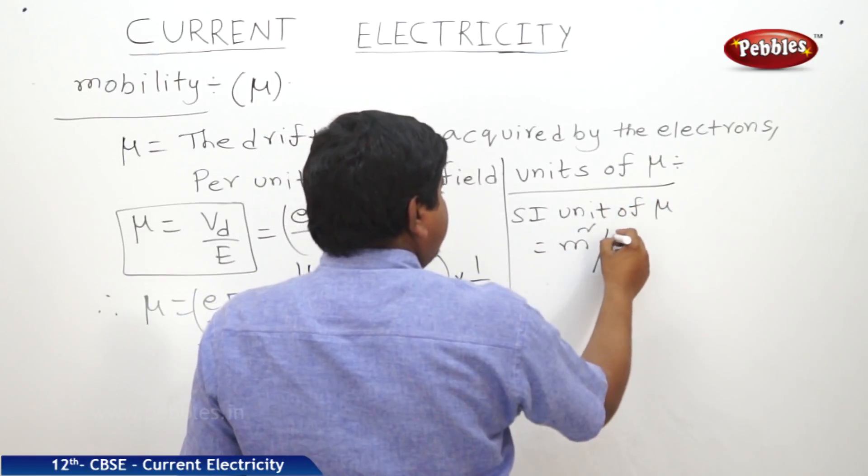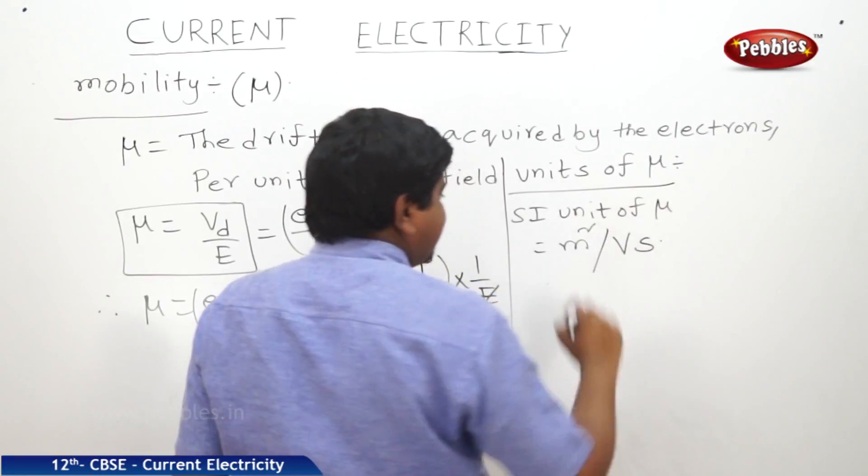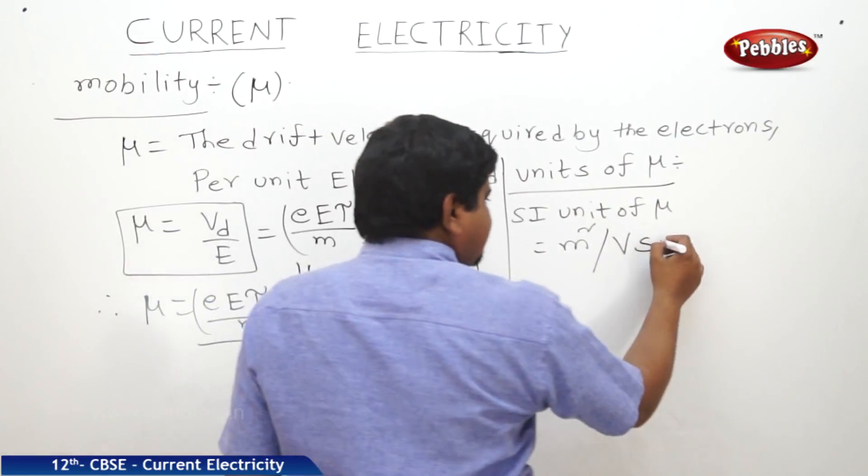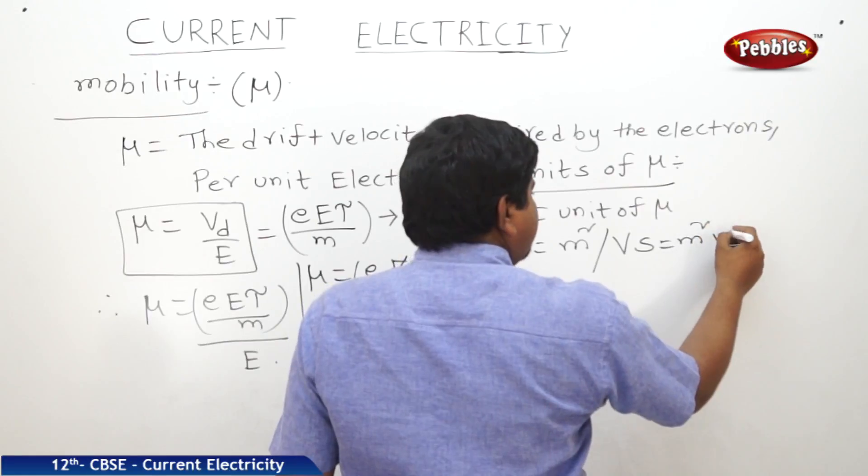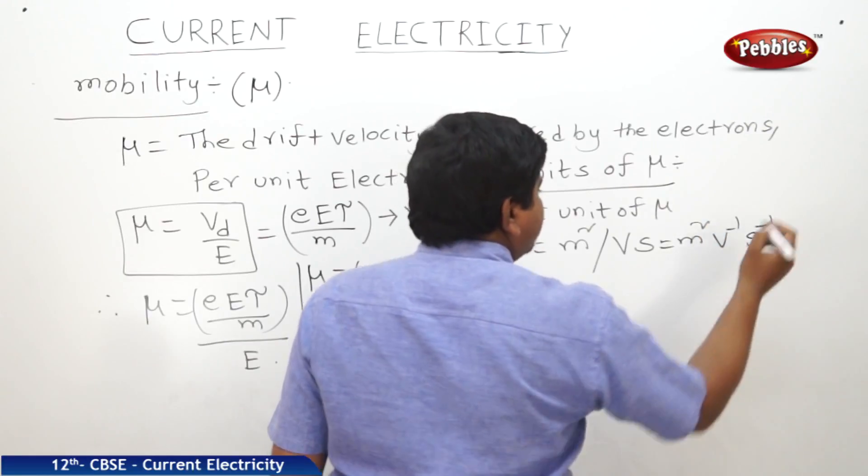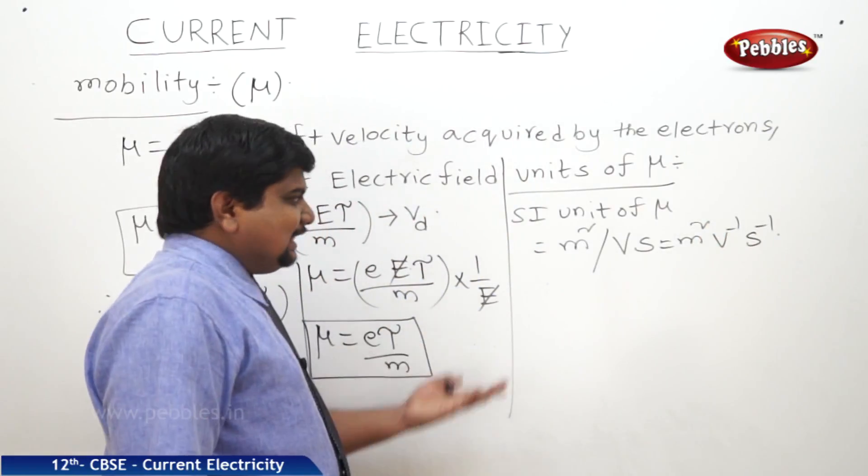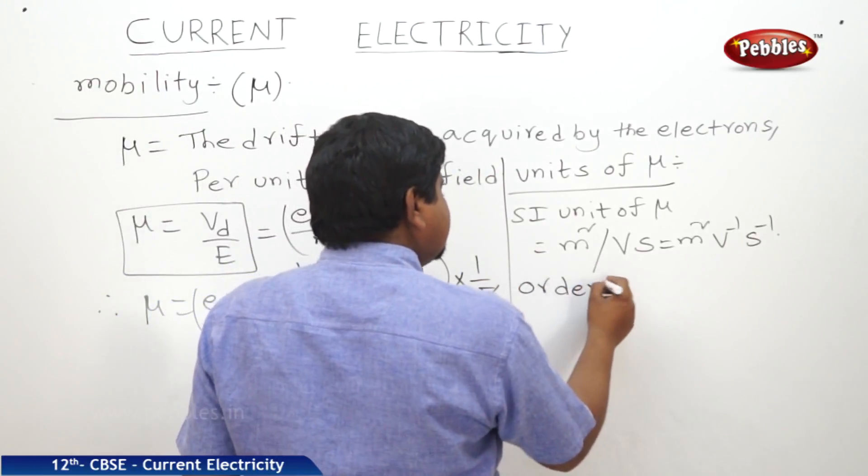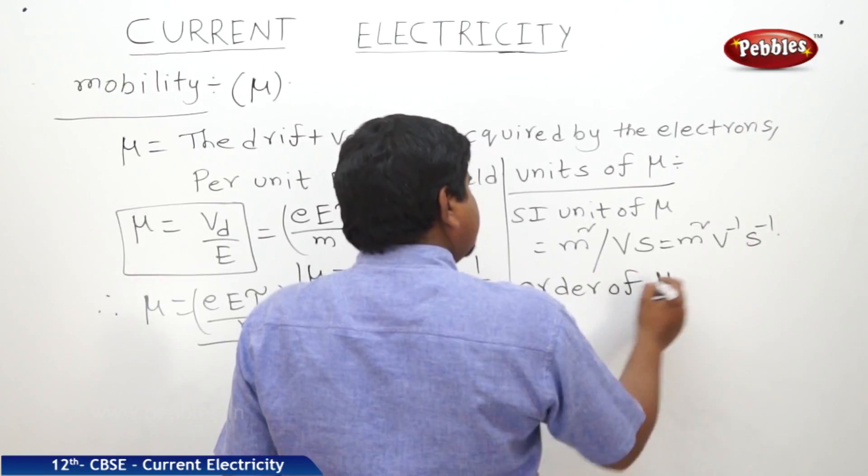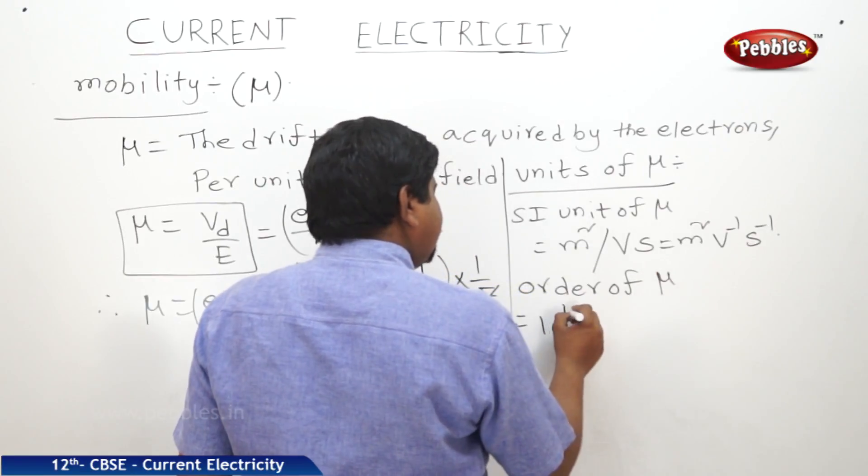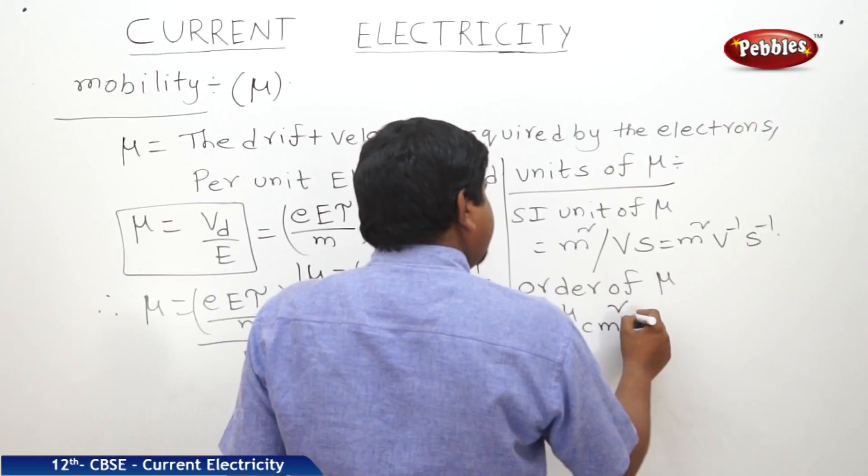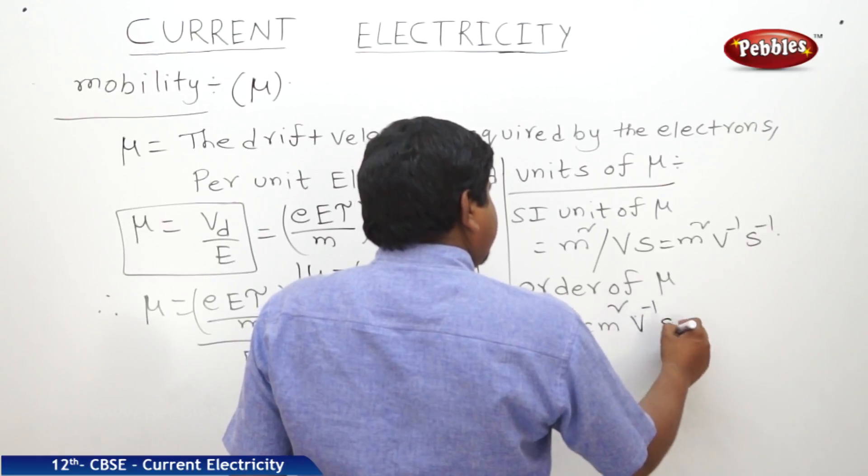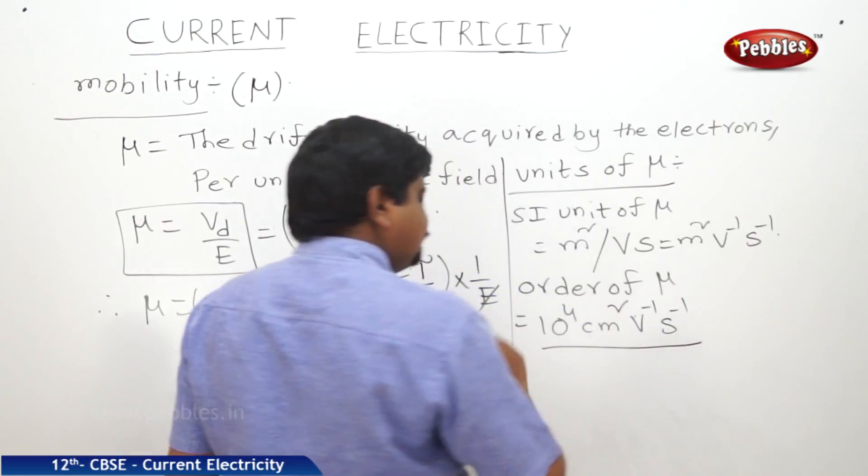Meter square per volt second or we can write meter square volt power minus 1 s power minus 1. If you want to write an order of this mu, order of mu is equal to 10 to the power of 4 centimeter square V power minus 1 s power minus 1.